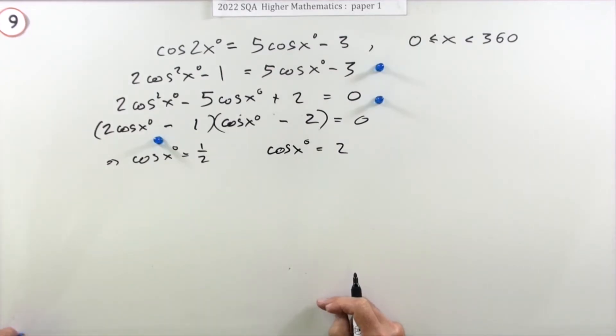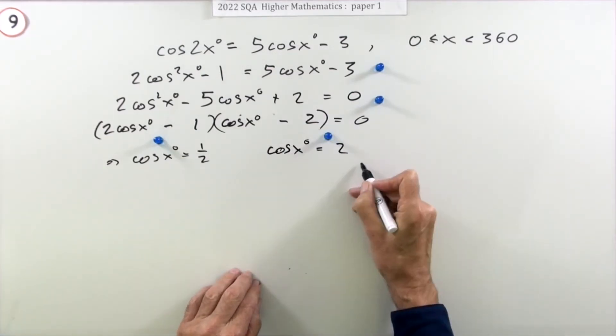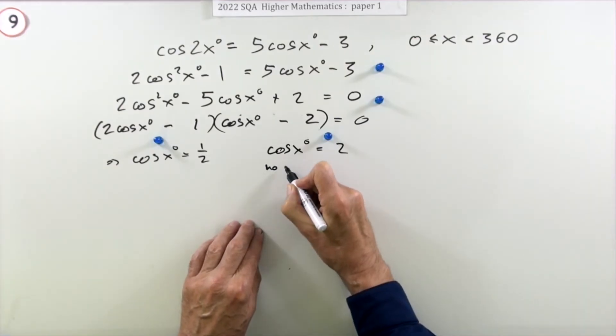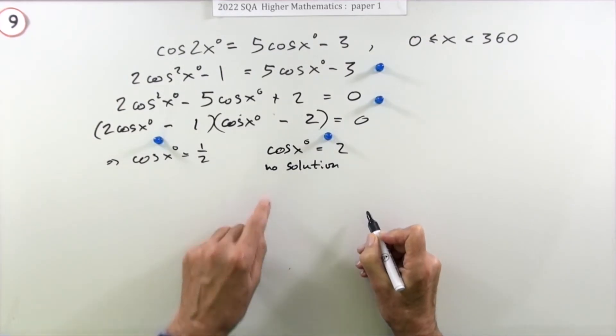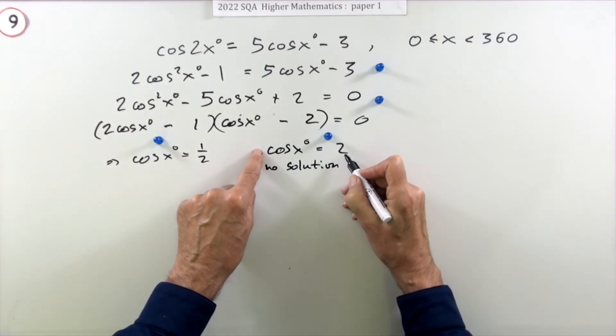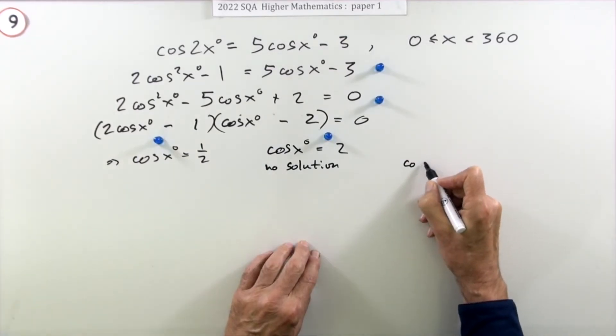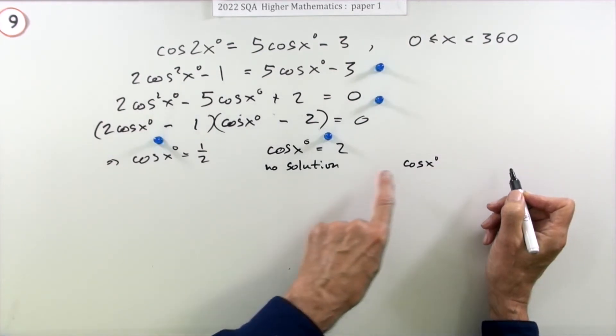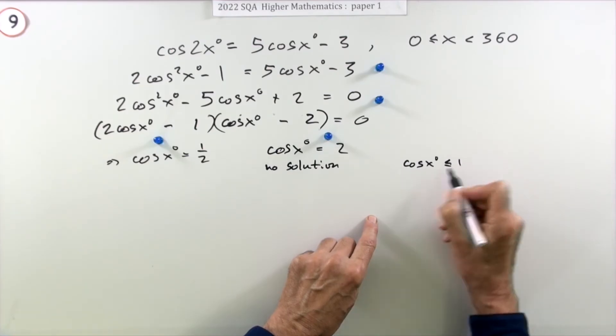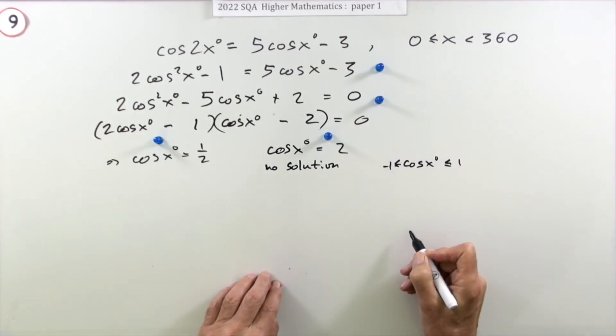If this bracket comes to zero, that means cos x would have to be 2. That gets a mark, but doesn't go any further. This part has no solution because a cosine can't get up to two. You could put a reason: cos x has to be between 1 and -1, less than or equal to 1, greater than or equal to -1.